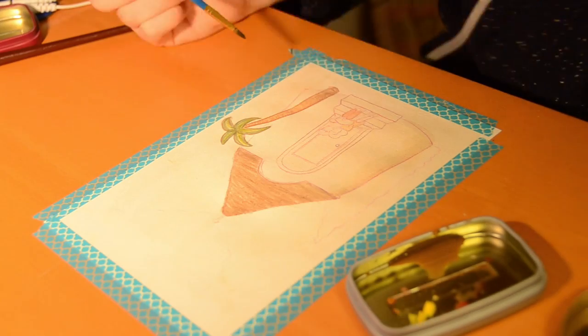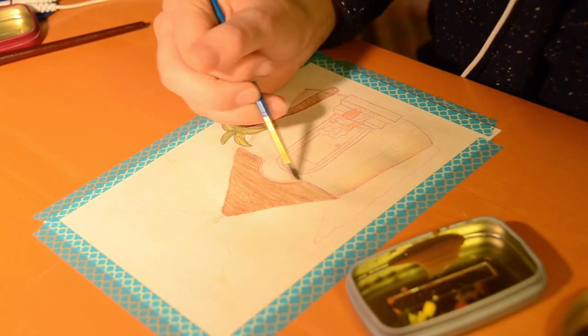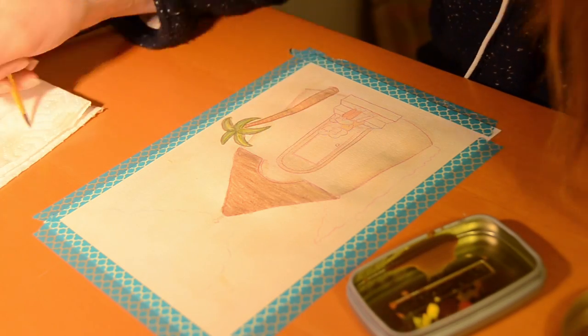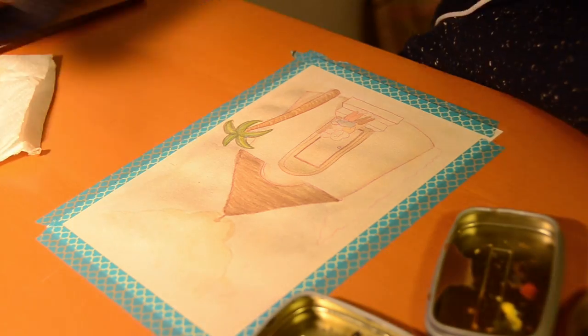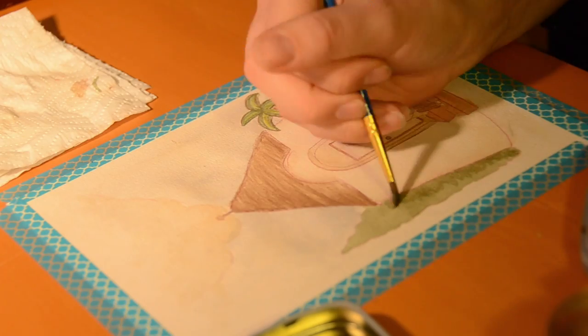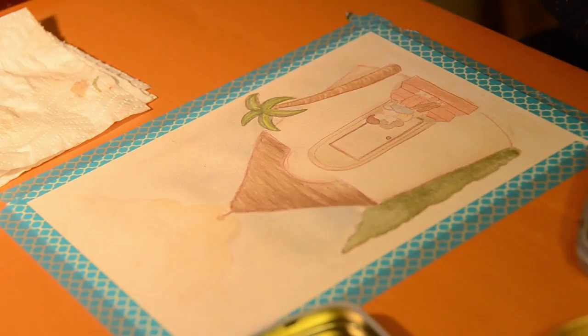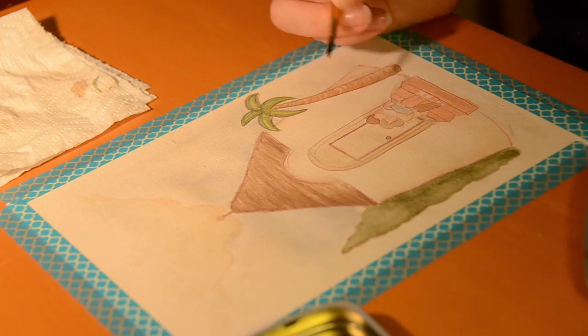And I'm now going over creating some more shadows of the house. The house is supposed to be white but obviously I can't just leave it white to be the color of the paper. So I am making shadows to make sure it blends in with the rest of the piece.